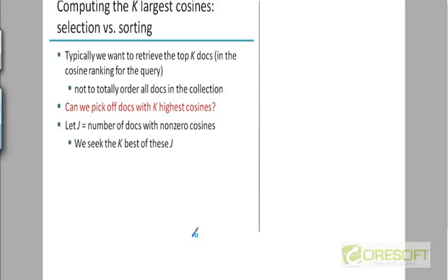Now, having done this calculation, how do we choose the k largest cosines? Can we do this without completely sorting the list of documents? Let's say the number of documents that have a non-zero cosine with the query is j. Obviously j is going to be less than n. But j could still be pretty large. So how do you choose the best k out of j?